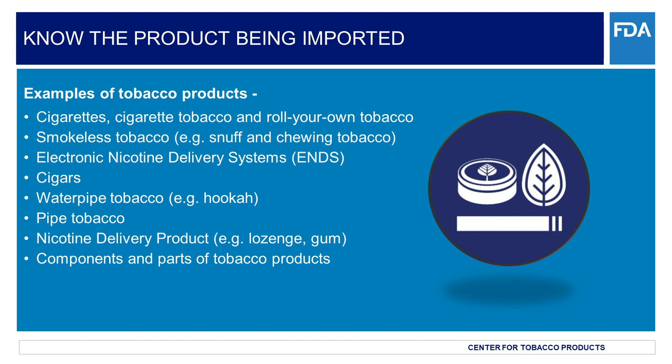This includes products such as electronic nicotine delivery systems, or ENDS, cigars, water pipe tobacco (also called hookah tobacco), pipe tobacco, nicotine delivery products like dissolvables, lozenges, gum, gel, and other future products that meet the tobacco product definition. As a reminder, as of April 14, 2022, these examples can also include non-tobacco nicotine products. We will talk more about ENDS products in the next couple of slides.